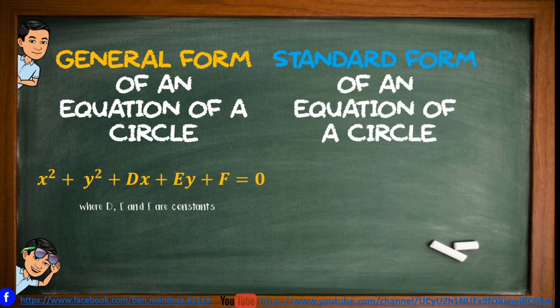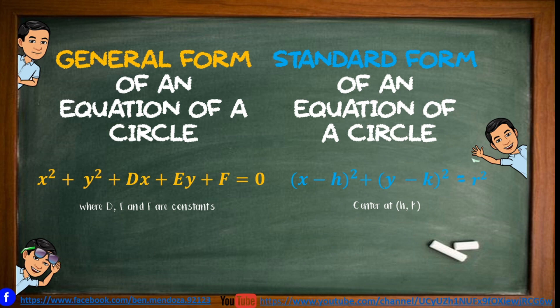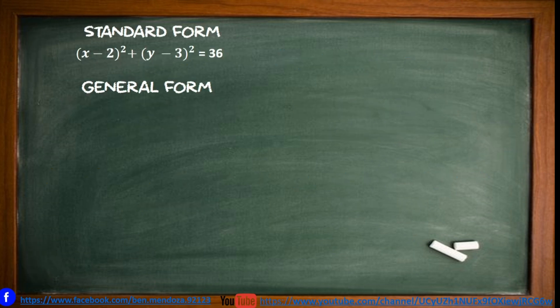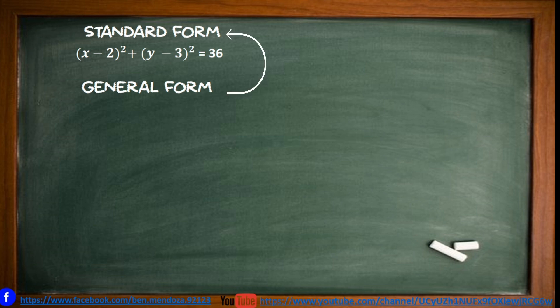On the other hand, we have the standard form of an equation of a circle, which is the quantity of x minus h squared plus the quantity of y minus k squared is equal to r squared, where the center is at (h, k). The objective of this lesson is to convert equations from standard to general form and from general back to standard form.